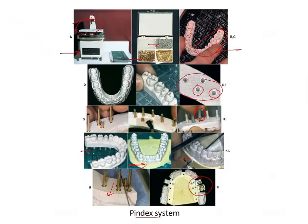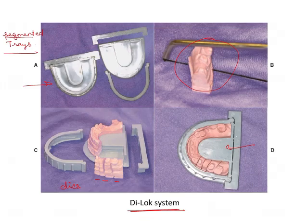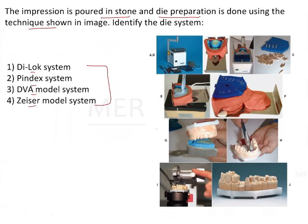Coming back to the question, the identifying features in the image are: the plastic base, the silicon putty index, and the placement of dowel pins before pouring. These are all indicative of the Zsir model system. So the correct answer is the Zsir model system.